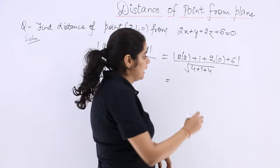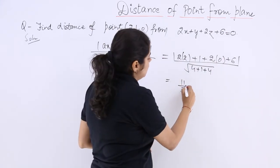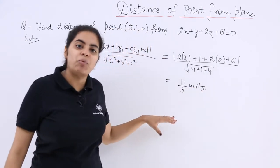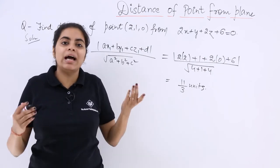So it is 4 + 1 + 6 = 11, and the denominator is the square root of 9, which is 3. So the required distance is 11/3 units. We have to do it like this - we just write the formula and put in the values.